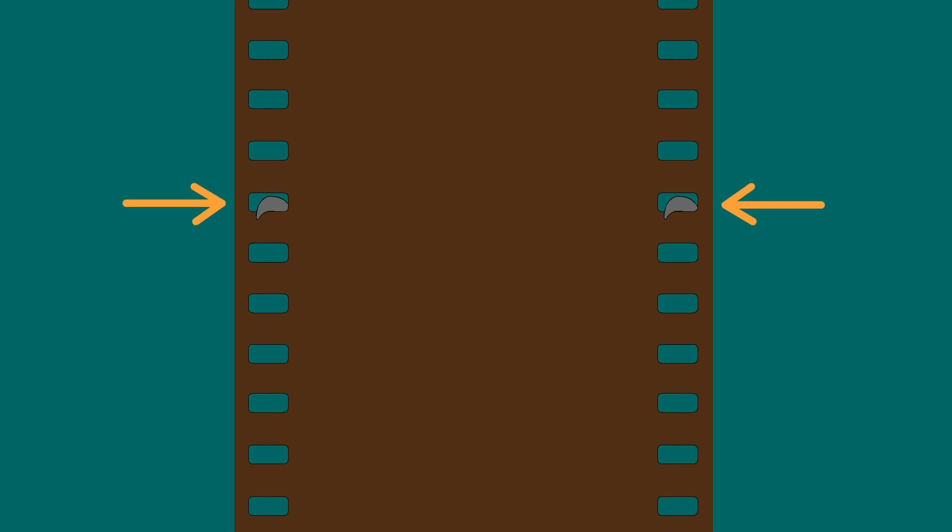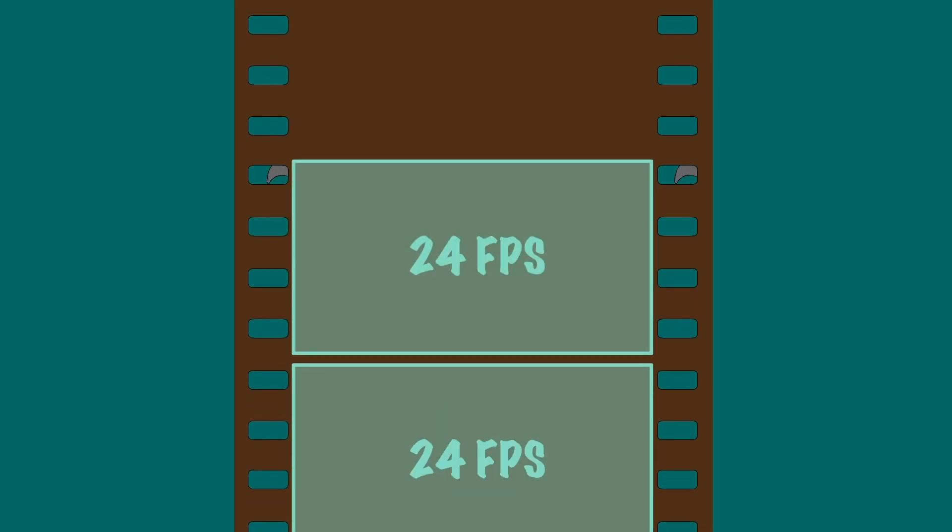These perforations are needed so that while the camera is rolling, small hooks can insert themselves and drag the film strip down to position the next frame ready for exposing. This all happens with incredible speed, as the standard for film is 24 frames per second.